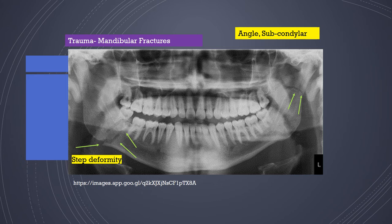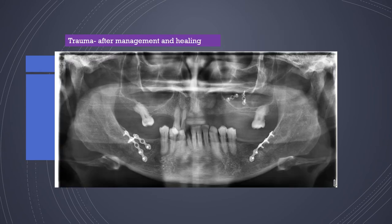Moving on to trauma — panoramic radiographs are very useful when looking at trauma cases. This is an example of a mandibular fracture with an angle fracture on the right side and a subcondylar fracture on the left side. Clinically, you would be able to palpate a step deformity at the angle fracture. Post-management imaging shows bone plating done in multiple areas, and the bone has healed well — the metal plates will remain in the patient's bone permanently.